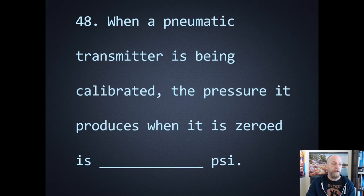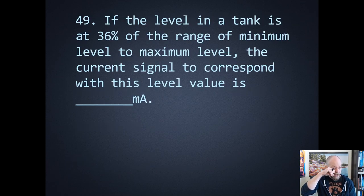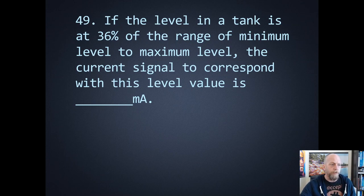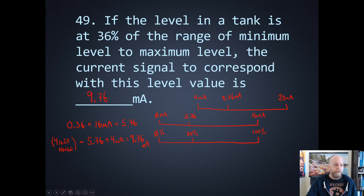Number forty-eight: when a pneumatic transmitter is being calibrated, the pressure produced when it's being zeroed — zero is the low end of the range. It's a 3 to 15 PSI range, so the low end is going to be 3 PSI. Number forty-nine: the level in a tank is at 36% of the range from minimum to maximum level. The current signal to correspond with this level is how many milliamps? The answer is 9.76 milliamps.